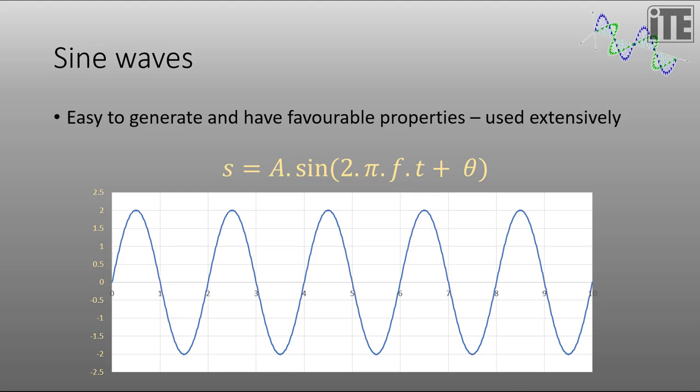Sine waves are used extensively in telecommunications. One of the reasons is that they're very easy to generate. But another reason is that they have very favorable properties. So here we can see a sine wave which has an amplitude of 2. That's the symbol A in this equation here. And can you tell what the frequency of this sine wave is? If the horizontal axis is in units of seconds, what's the frequency?